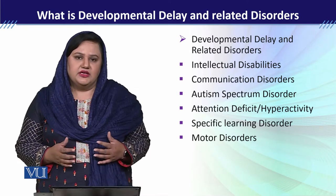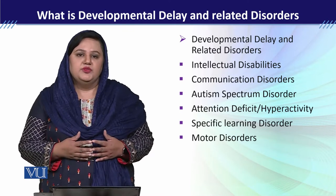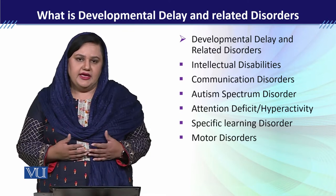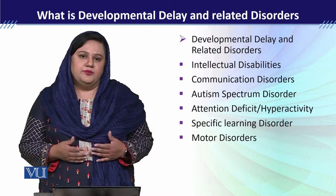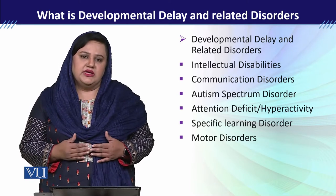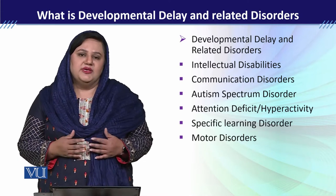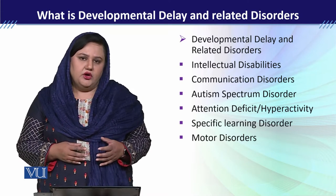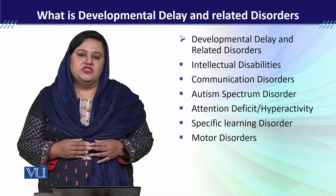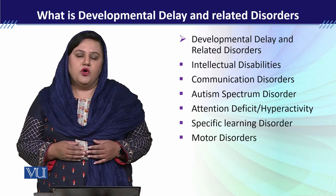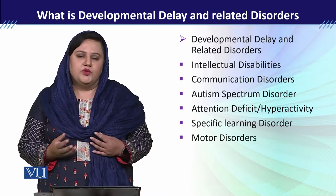Number one is intellectual disabilities. We will say that a child has an intellectual disability when the child has a deficit in mental abilities as well as a deficit in adaptive functioning. If we explain what is the meaning of deficit in mental abilities, that means the child is unable to perform certain tasks like reasoning, planning, and problem solving.